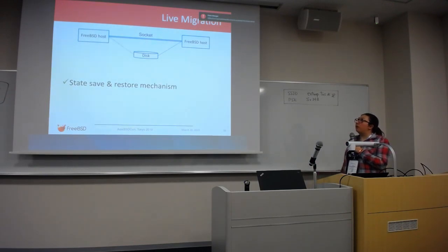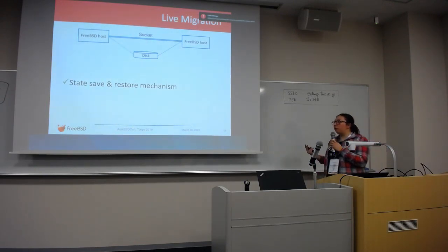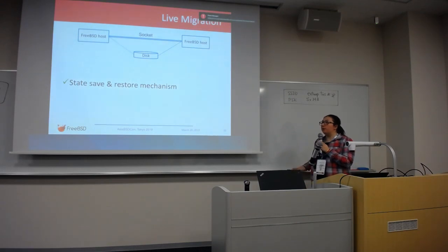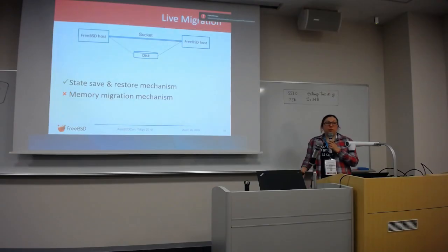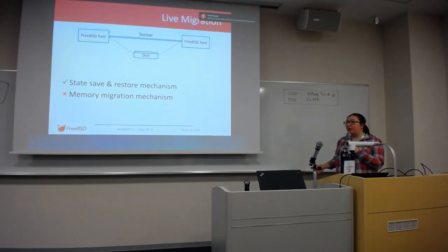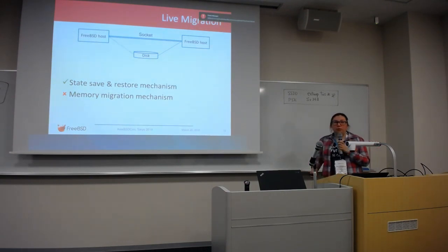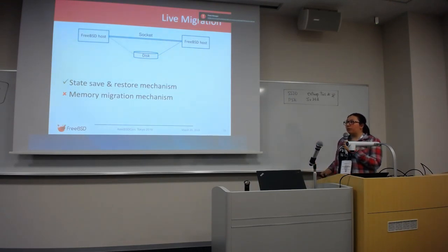For the migration, we have two main parts. The first one is the state-safe restore mechanism that we use for restoring the state and the memory. Since we want something live, the memory should be migrated very fast. An approach would be migrating the memory in rounds.